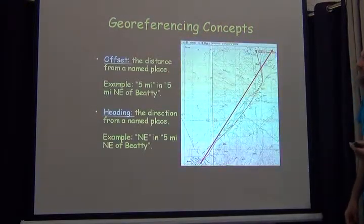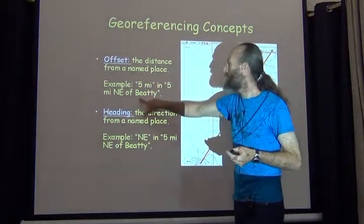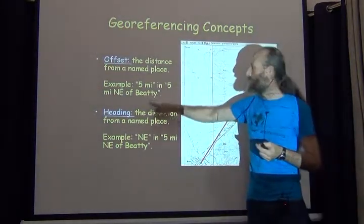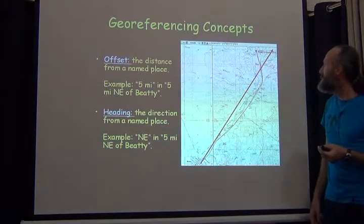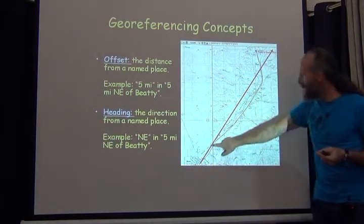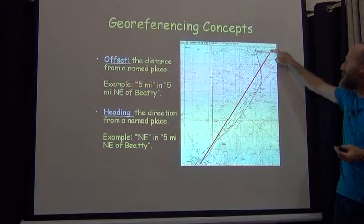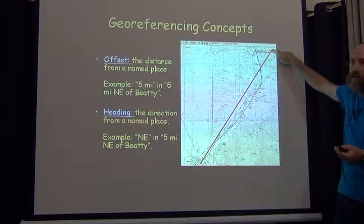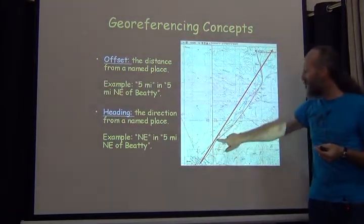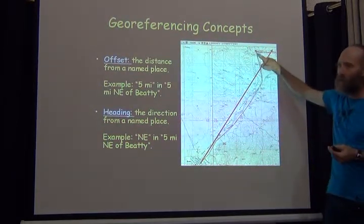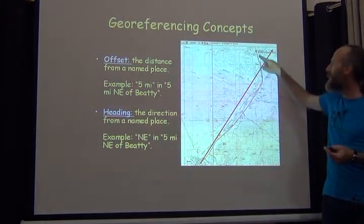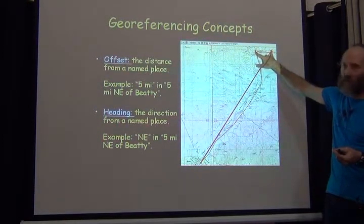The next two concepts are offset and heading. In the example 'five miles northeast of Beatty,' five miles is the offset and northeast is the heading. Here's a depiction: Beatty is here, the arrow points northeast and is five miles long. There's another way to interpret such a description — to follow a known route. This other red line follows a road in the northeast direction for five miles. So there are two possible interpretations.